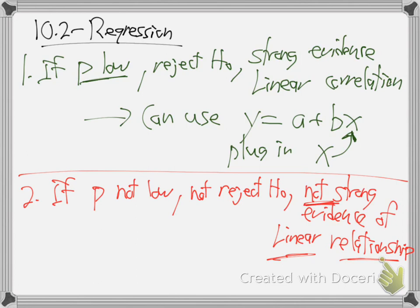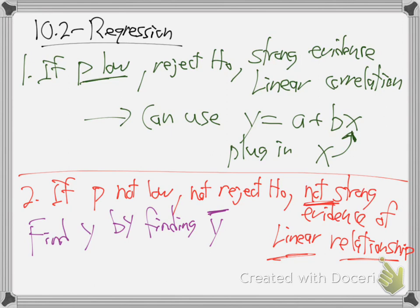If the p is not low, that's going to be the next problem. You do not reject the null — there's not strong evidence of a linear relationship. The calculator will still crank out the A and the B and give you an equation, but it'll also tell you by giving you a high p-value that you shouldn't use that equation. That line doesn't really connect the two variables. So then, how do you find the Y value? Find Y by finding Y-bar — the average of the Y values.